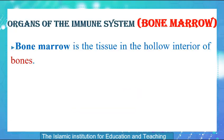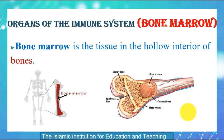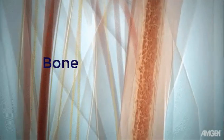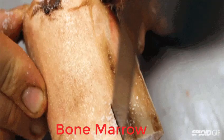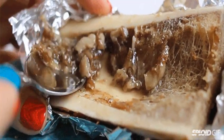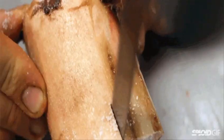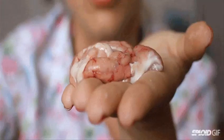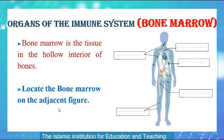Bone marrow is the tissue in the hollow interior of bones. This is the bone, and it contains inside it the bone marrow. Here is the dissection of a fried bone showing the bone marrow inside it. Please locate the bone marrow in the adjacent figure.